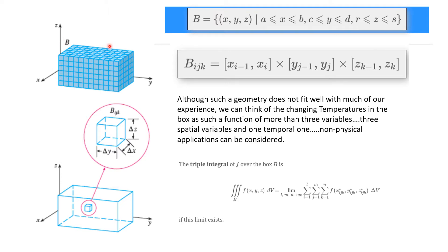We're going to slice these boxes into little three-dimensional rectangles. The technical word for those is parallel pipettes. So a box is going to be the set of all x, y, and z, where x is between a and b, y is between c and d, and z is between r and s, where all those other values are constants. We take the cross product of those, getting a box — again, this is a parallel pipette. That's the little piece that we're going to get.